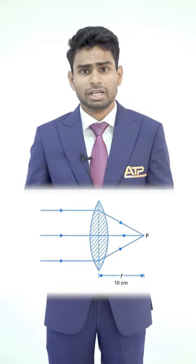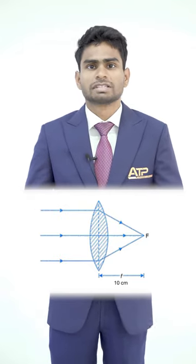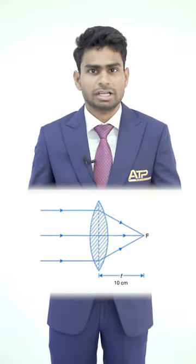Look at the ray diagram shown here. The rays which are coming from infinity parallel to the principal axis after incident on this convex lens of focal length 10 cm will converge at its focal point which is at a distance of 10 cm.